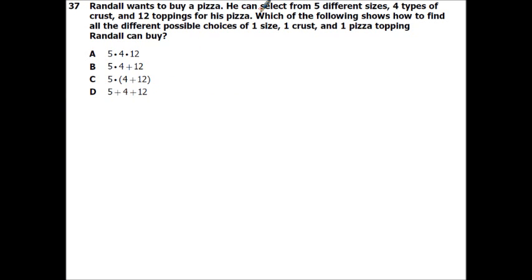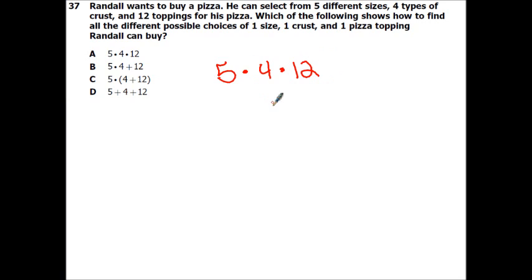Randall wants to buy a pizza. He can select from five different sizes, four types of crusts, and 12 toppings. Which expression shows all possible choices for one size, one crust, one topping? This is just using the counting principle — you multiply each type: 5 times 4 times 12. So the answer is A.